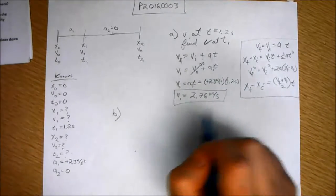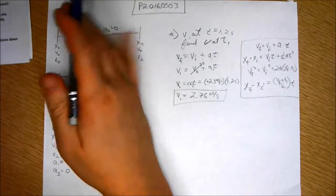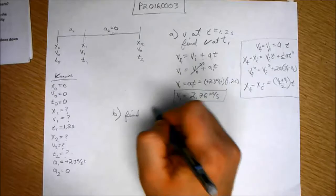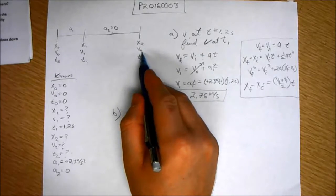Now, part b says, what is the velocity at the end of the race? So, find v2 at the end of the race here.